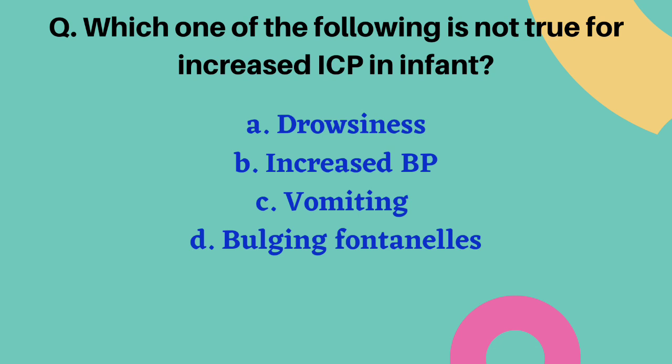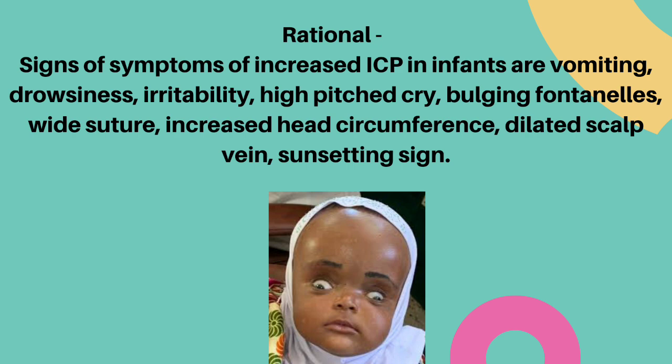Which of the following is NOT true for increased ICP in infants? Options are drowsiness, increased blood pressure, vomiting, and bulging fontanel. The correct answer is option B — increased blood pressure. Signs of increased ICP in infants include vomiting, drowsiness, irritability, high-pitched cry, bulging fontanels, wide sutures, increased head circumference, dilated scalp veins, and sun-setting sign — where the baby's eyes drop downward due to hydrocephalus, as seen in the image.